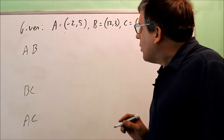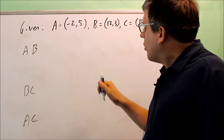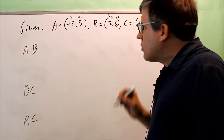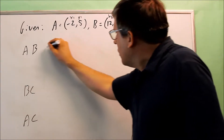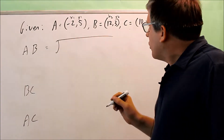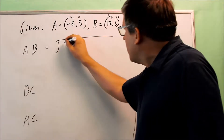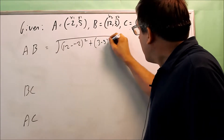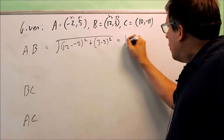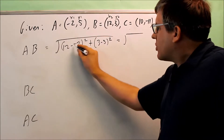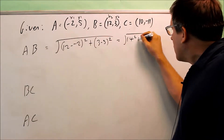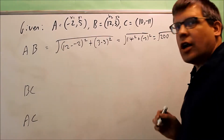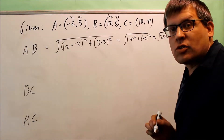The points are given for A and B. I'm going to label them X1, Y1 and X2, Y2, and put them into the distance formula. I take the square root of the difference of the X values: 12 minus negative 2, and the difference of the Y values: 3 minus 5. That gives me 14 squared plus negative 2 squared, which simplifies to the square root of 200. I'll leave it in that form for now.